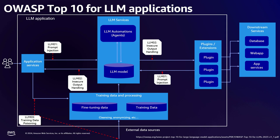With LLM03, we're looking at the training data. If you have training data that's been poisoned or modified in some way, it can introduce biases or other issues into the model, which comes out at inference time when you try to query it.